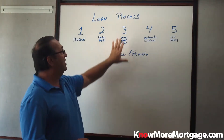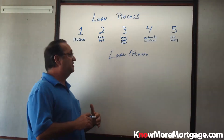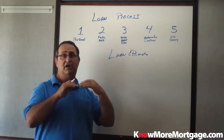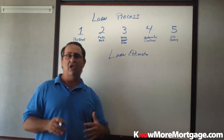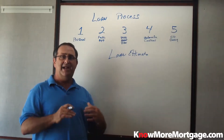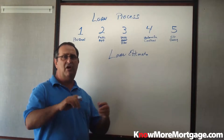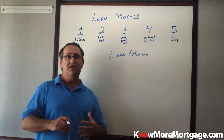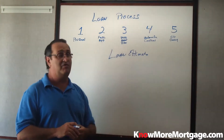Once we get the loan estimate out to you, almost all lenders today are using an electronic disclosure process where it comes into your email. The first thing you can do is acknowledge the use of electronic communication. Then with the loan estimate, you're just acknowledging that you received it and reviewed all the costs in it. This is your chance to ask questions — acknowledge the estimate, print it out, write all over it with your questions, and get back with your loan originator. You want to make sure all your information is right, because the loan application will be part of your initial disclosures within that loan estimate.